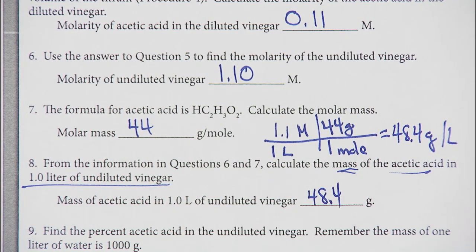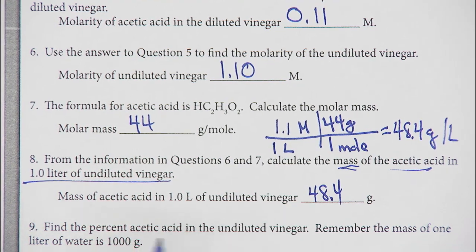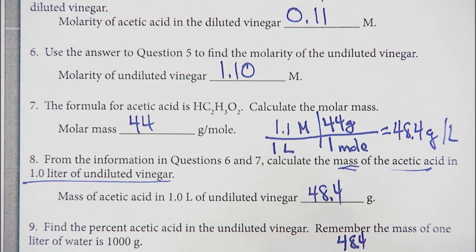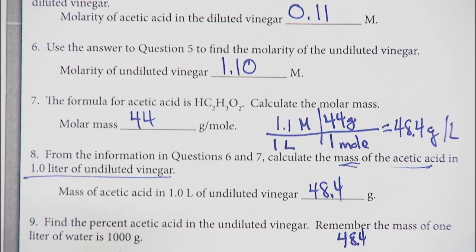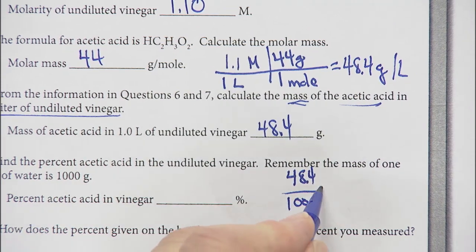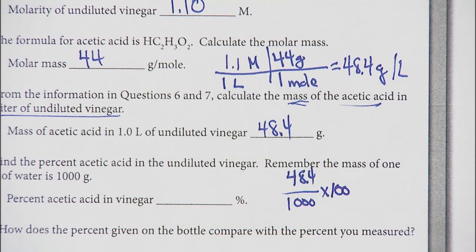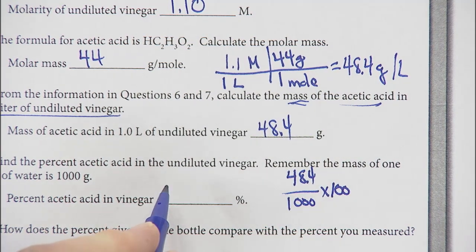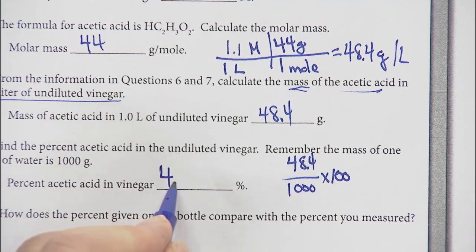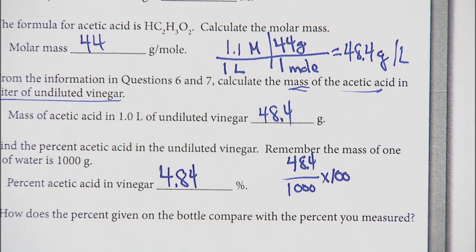I look at what is the percent of that. That's 48.4 over 1,000 because there's 1,000 grams, 1,000 milliliters, times 100 to make it percent. That will come out at 4.84 percent.